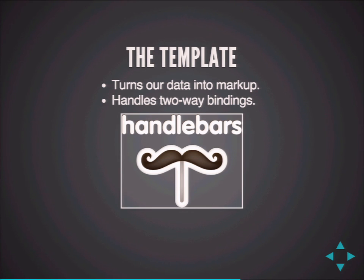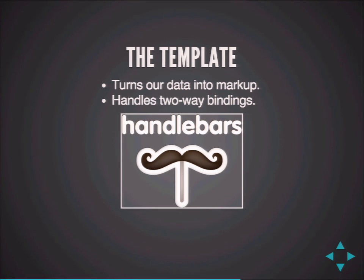Ember.js uses a templating system called Handlebars. It's very similar to Twig in many ways — the syntax is very similar and it has filters and actions. Much like Twig, it is a logic-less templating system. It's extremely hard, if not impossible, to write logic inside your template beyond a simple if-this-has-a-value or loop. You can't really write code in there — and that's by design. Keep the template simple.